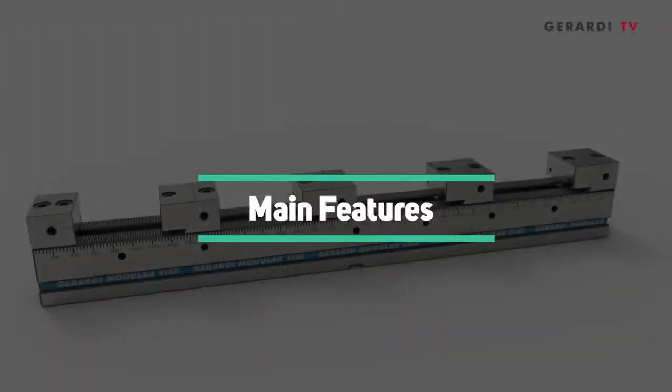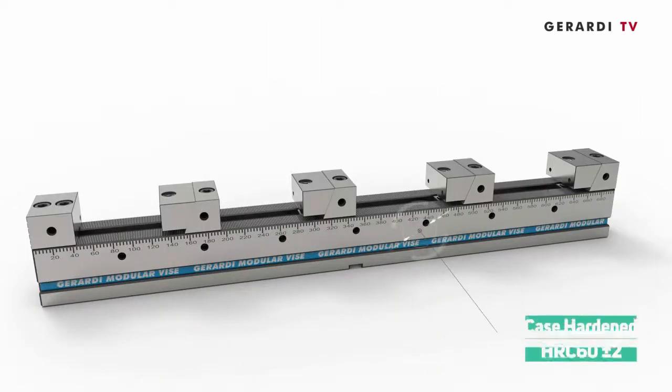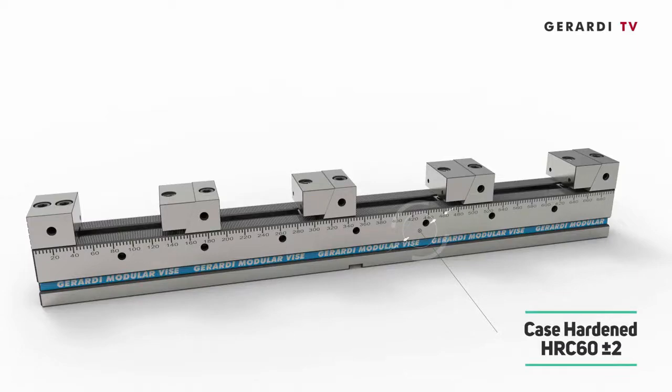Let's watch the main features. First, hardened and ground 60 plus or minus 2 HRC and spatial high alloyed stiff structure.